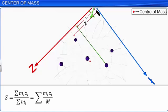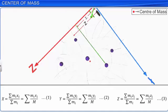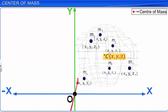Similarly, equations for Y and Z coordinates are defined. M equals Sigma(Mi) is the total mass of the system. The location of the center of mass of a system of particles depends on the locations of the constituent particles and their masses.